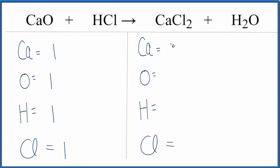Over on the product side, we have one calcium, oxygens we have one, hydrogens we have two, and chlorines we have two. So this equation is not balanced.